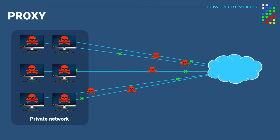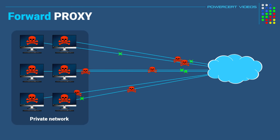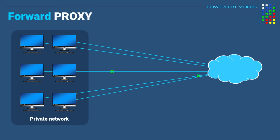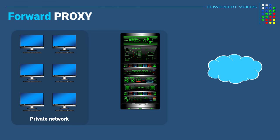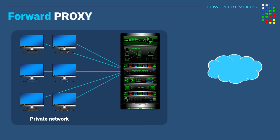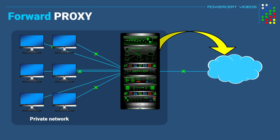So this is where a proxy, or to be more specific, a forward proxy can be beneficial. When a forward proxy server is used on this network, the proxy server is now the guardian of this network. So when all of these computers want to access the internet, they go to the proxy server instead, and then the proxy server will fetch the data out on the internet on their behalf.